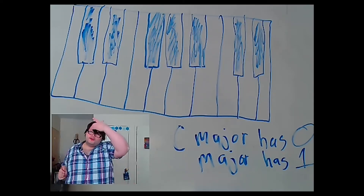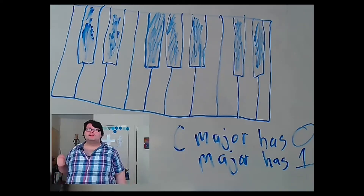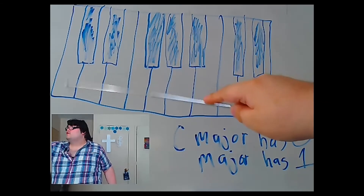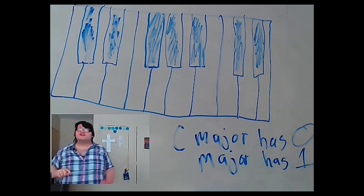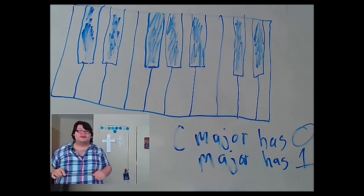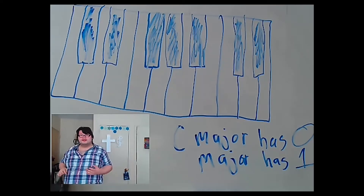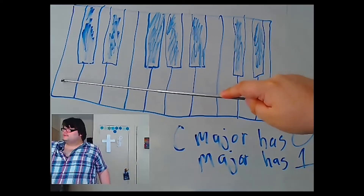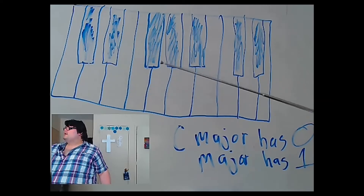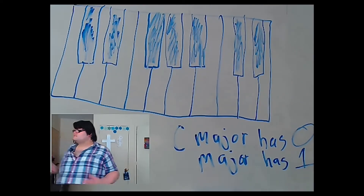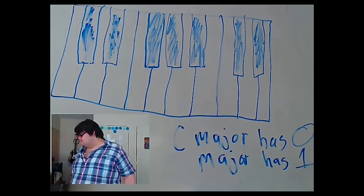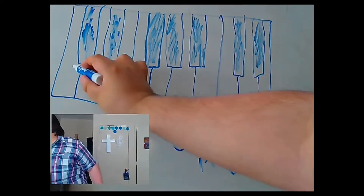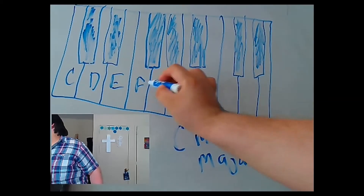You do include the original note — the main note is number one in the scale. So let's count until we reach the fifth note. We have one, two, three, four, five. I'm going to write down the letters: C, D, E, F, G, A, B, C, D, E.